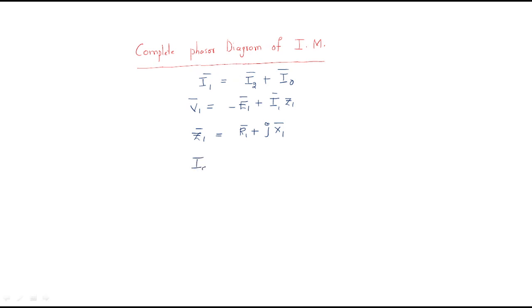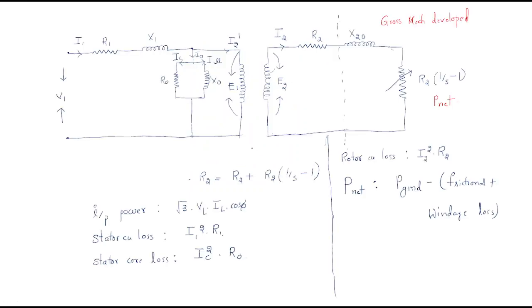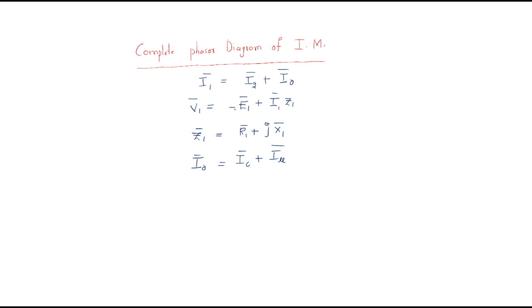The no-load current I0 equals the core loss component IC plus the magnetizing component I_mu. The EMF e2 equals I2 times Z2, where Z2 is the rotor impedance consisting of rotor resistance plus rotor reactance. We will now draw the phasor diagram for this.